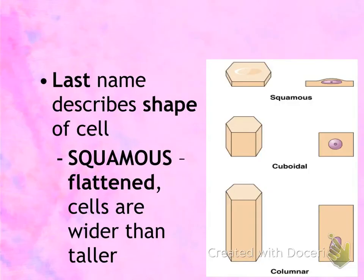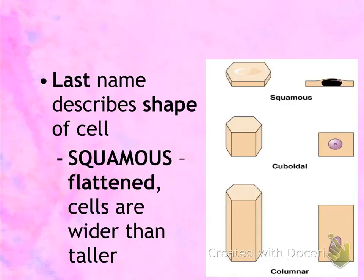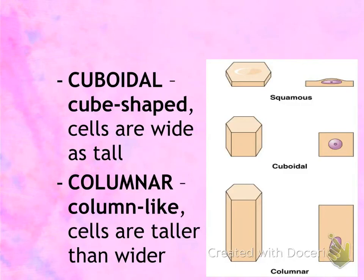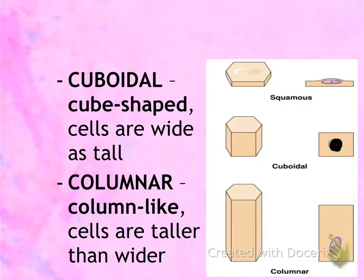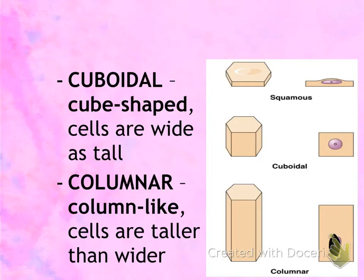The last name indicates the shape of the cell. The first shape is squamous, meaning flattened. Since you sometimes cannot see the cell outline, look for a flat, disc-shaped nucleus to identify a squamous cell. The second shape is cuboidal, meaning cube or square shaped, identified by a round nucleus. The third shape is columnar — the cells are tall like a column, and the nucleus is oval-shaped, standing tall. Don't confuse oval-shaped with disc-shaped.